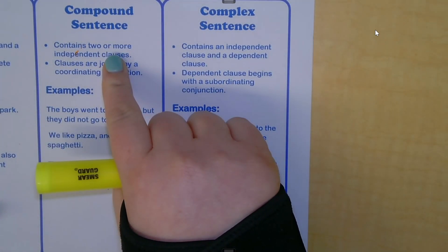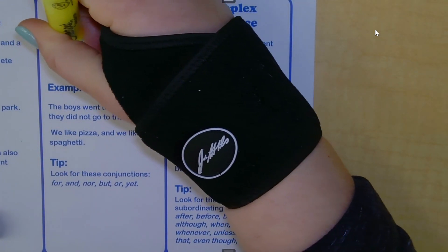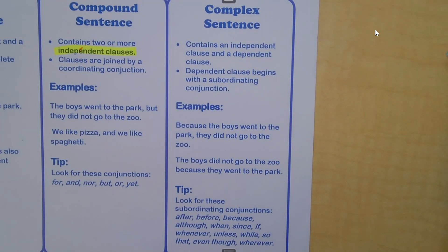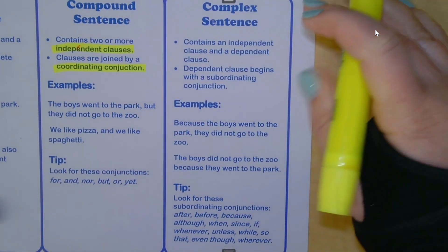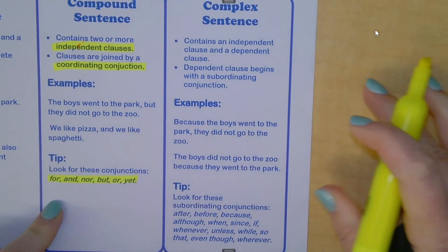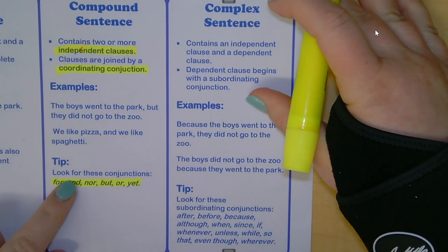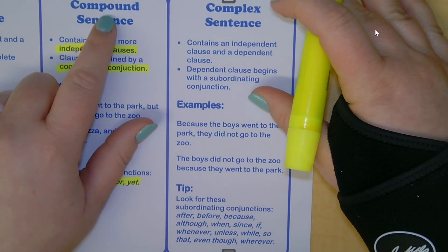A compound sentence contains two or more independent clauses. Remember, super important: an independent clause does not need help from anybody else. It doesn't need help from other words or more sentence parts. It can stand on its own as a complete sentence — it is a complete thought. These clauses are joined by a coordinating conjunction. Remember, coordinating conjunctions are the FANBOYS conjunctions: for, and, nor, but, or, yet.